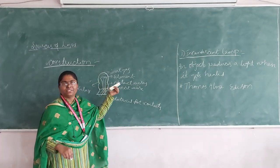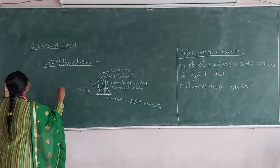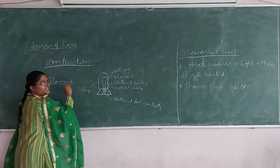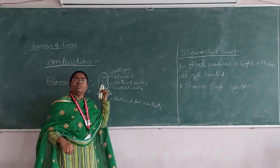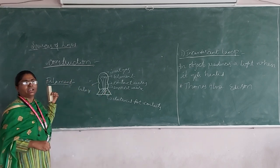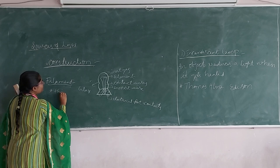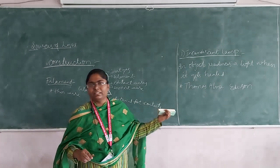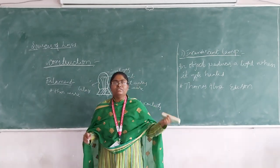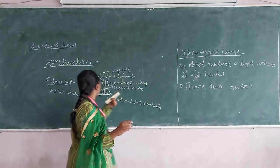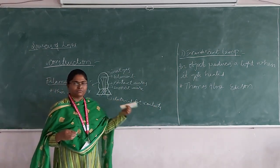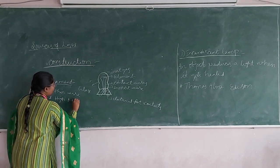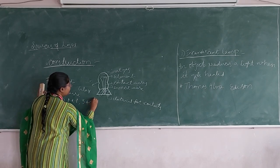The most important component is the filament. Filament plays a vital role in an incandescent lamp. A filament is a thin wire. Basically various types of filaments are there — carbon filament, tantalum filament, tungsten filament — but we are very specific about tungsten filament. The reason is it has a high melting point; its value is 3400 degrees centigrade.